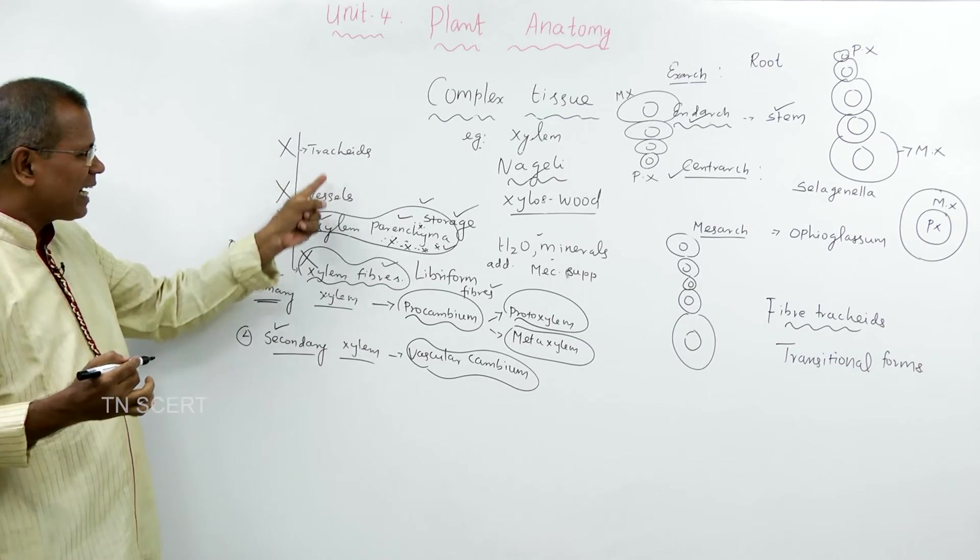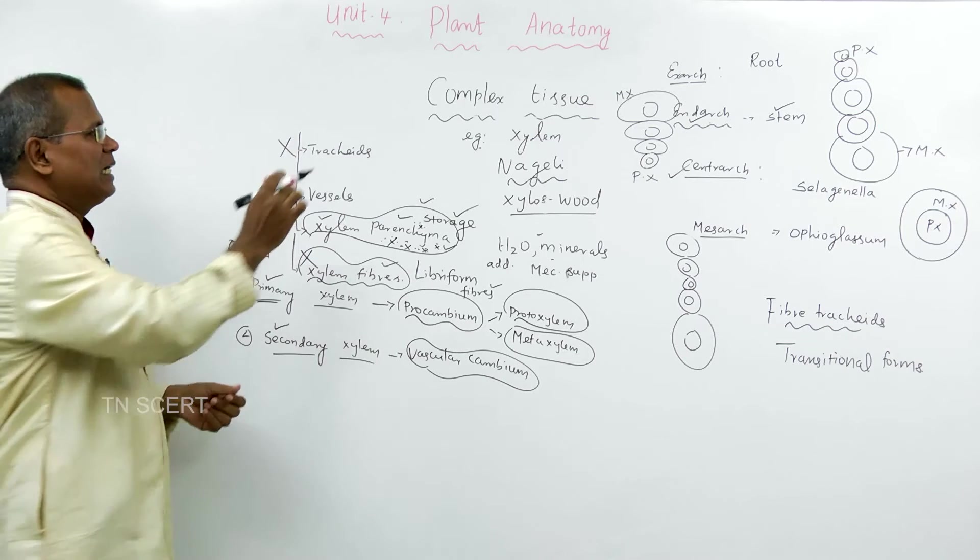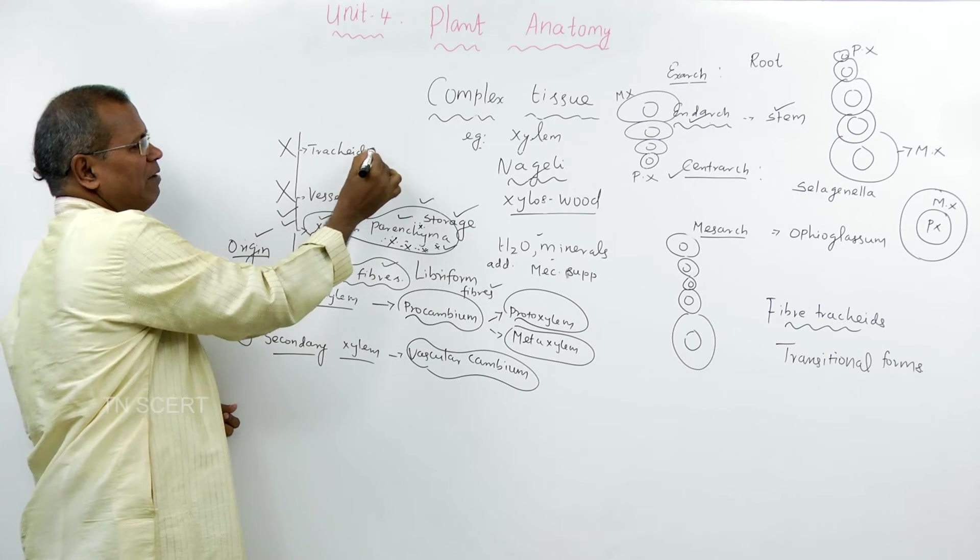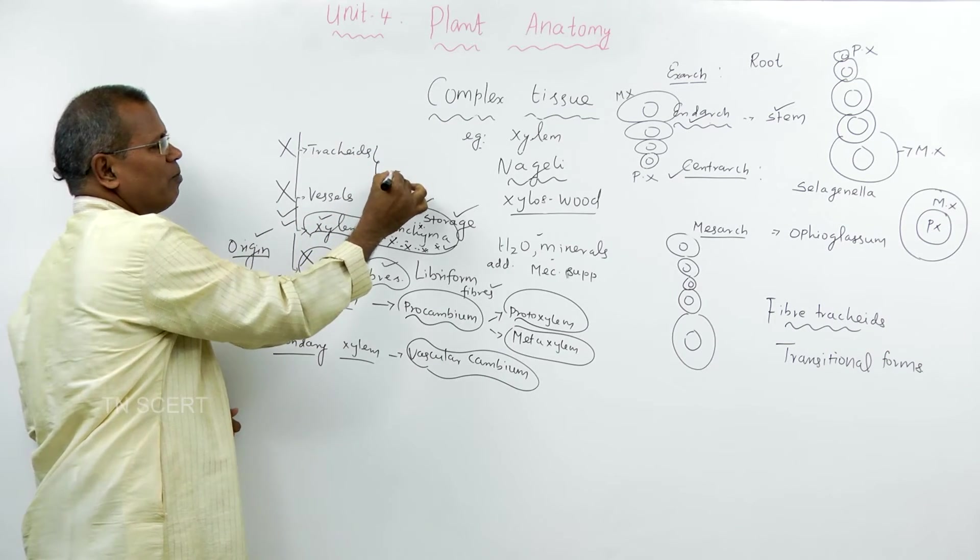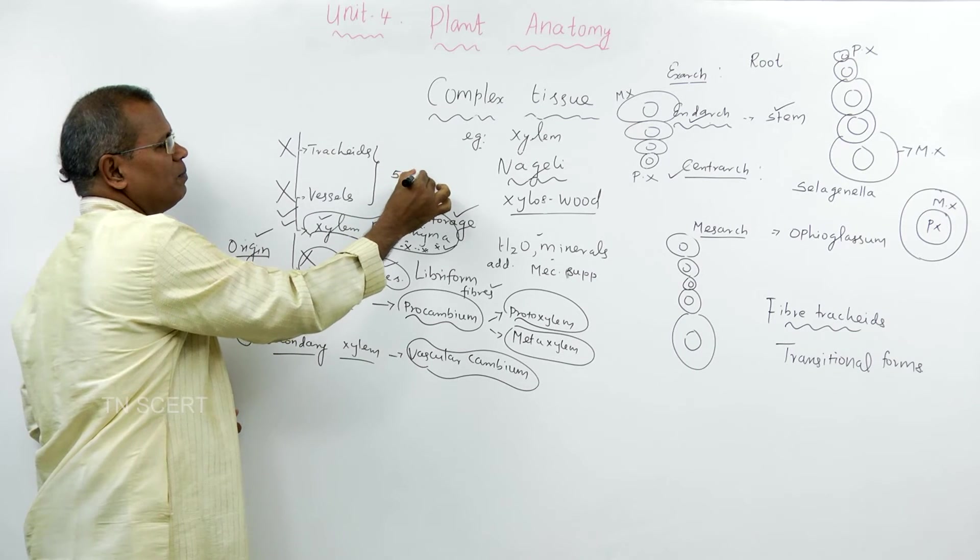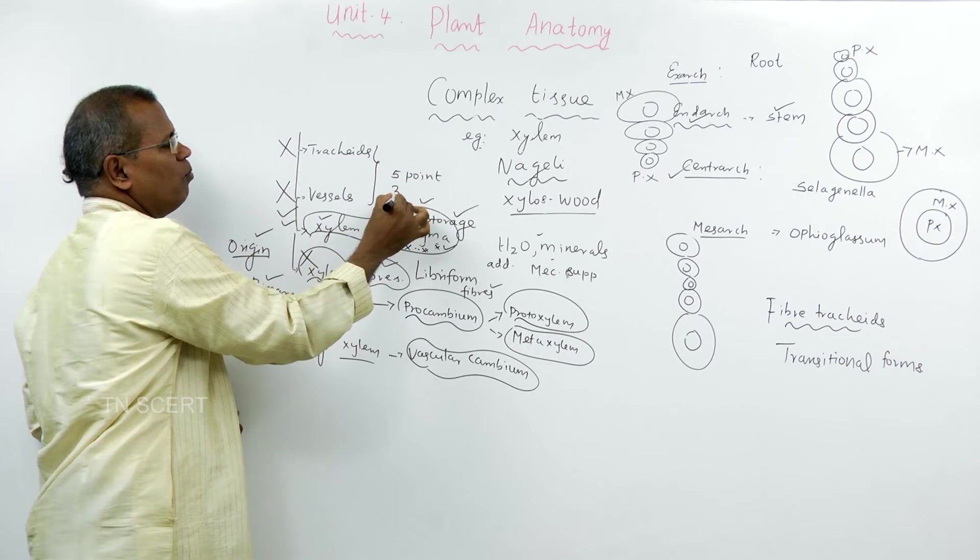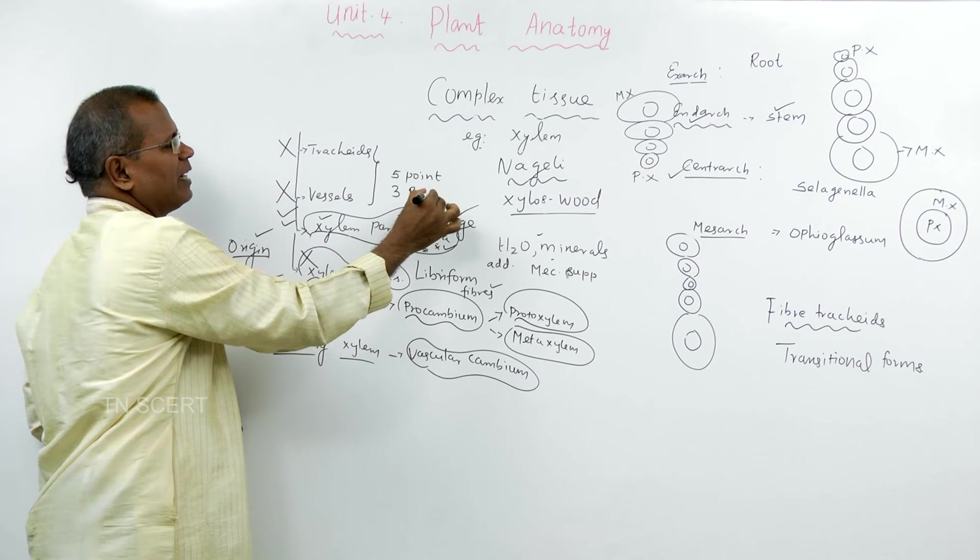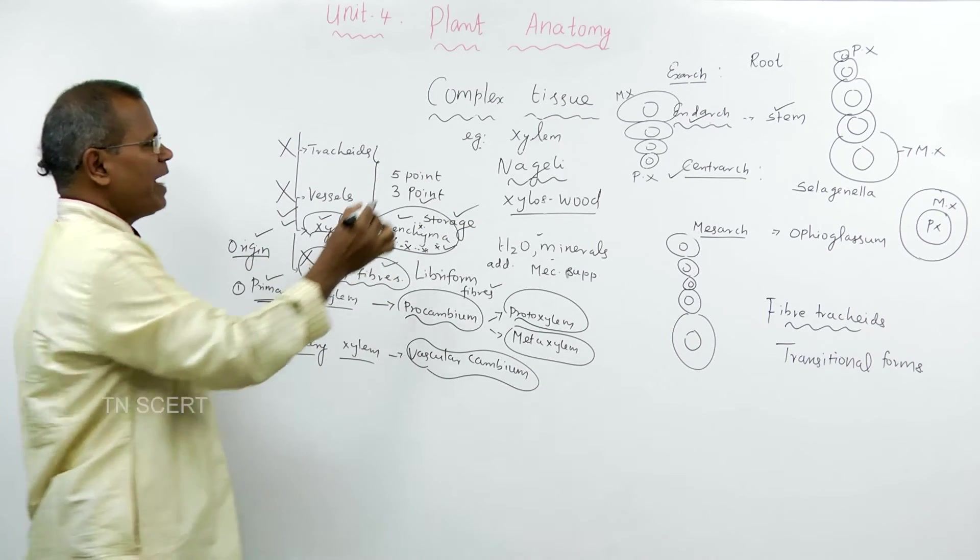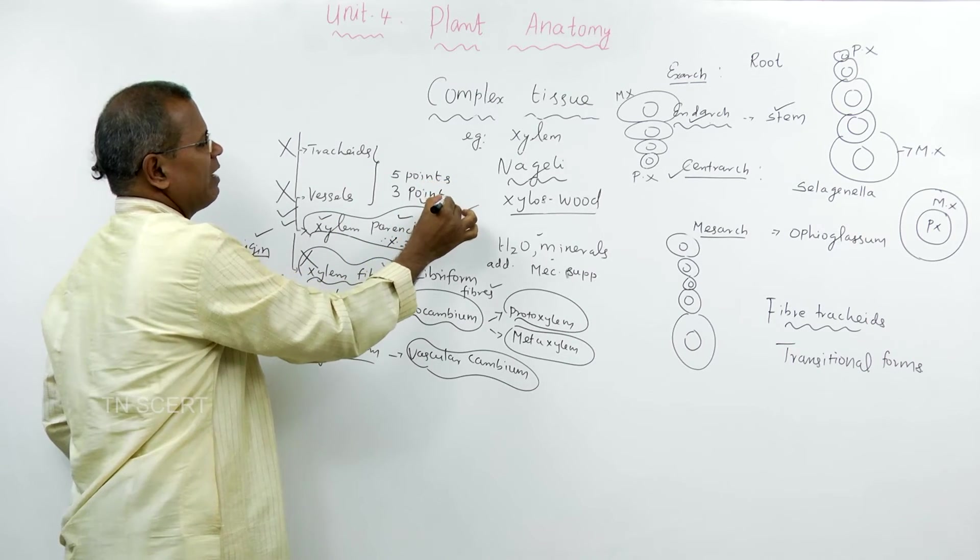Next most important, the tracheid and vessels. Tracheid and vessels, if we compare, five points are common. Three points are different.